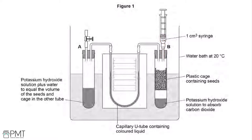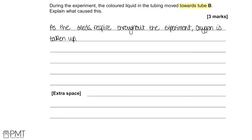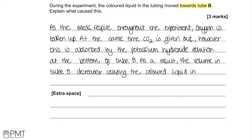After a while, as you consistently take measurements, you use up the limited supply of oxygen. After the oxygen has been used up, the oxygen remaining inside the tube will be taken in by the seeds. As a result, you're replicating a vacuum mechanism where the colored liquid inside the U-tube is pulled up. As the volume inside tube B decreases, the colored liquid draws up towards the right-hand side. So, as the seeds respire, oxygen is taken up; at the same time, carbon dioxide is given out but absorbed by the potassium hydroxide solution, causing the colored liquid to move towards tube B.